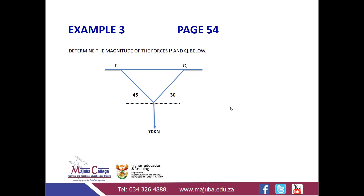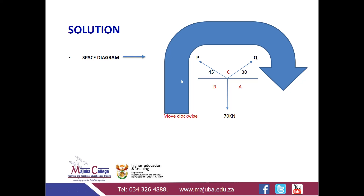The problem we are working on today is on page 54, example number three. The question says: determine the magnitude of forces P and Q. Force P is inclining at an angle of 45 degrees, force Q is inclining at 30 degrees, and we have another force given as 70 kN. We are not given the magnitude of P and Q — we must determine them.